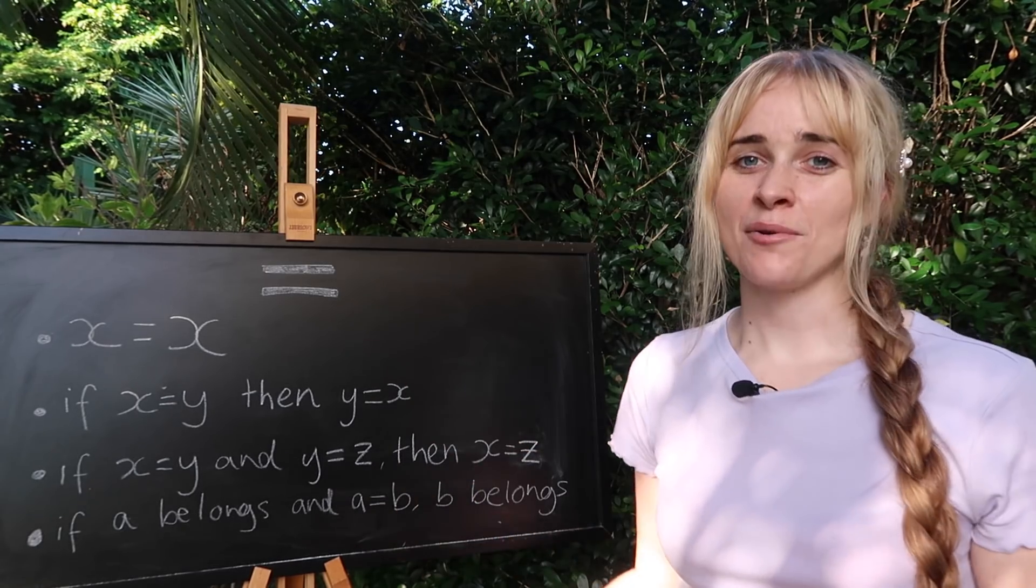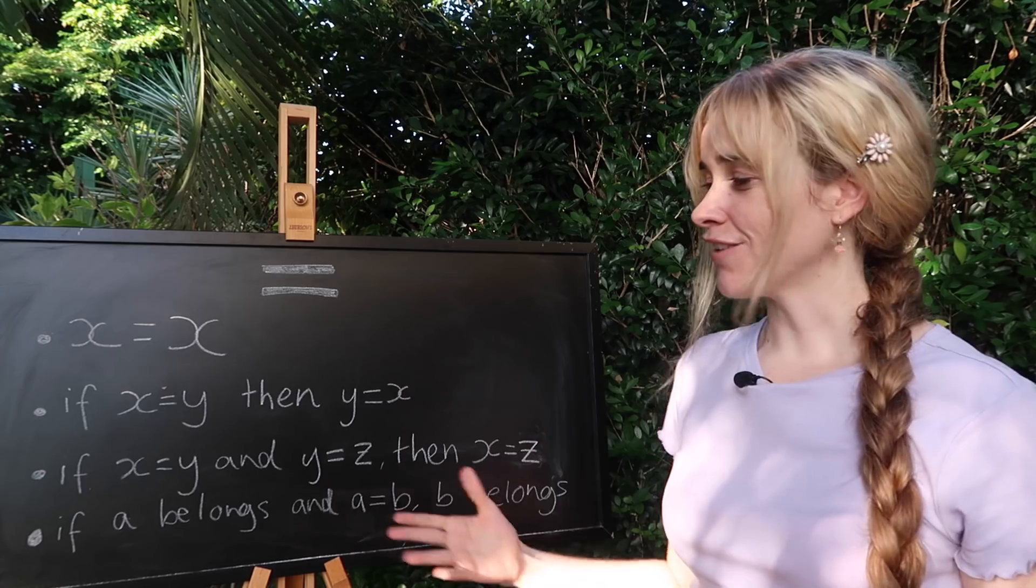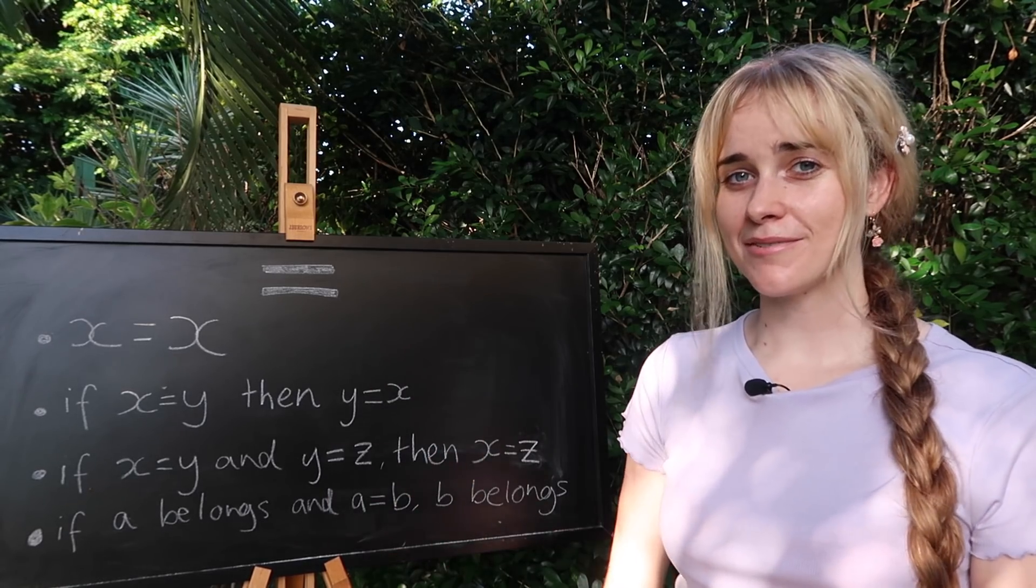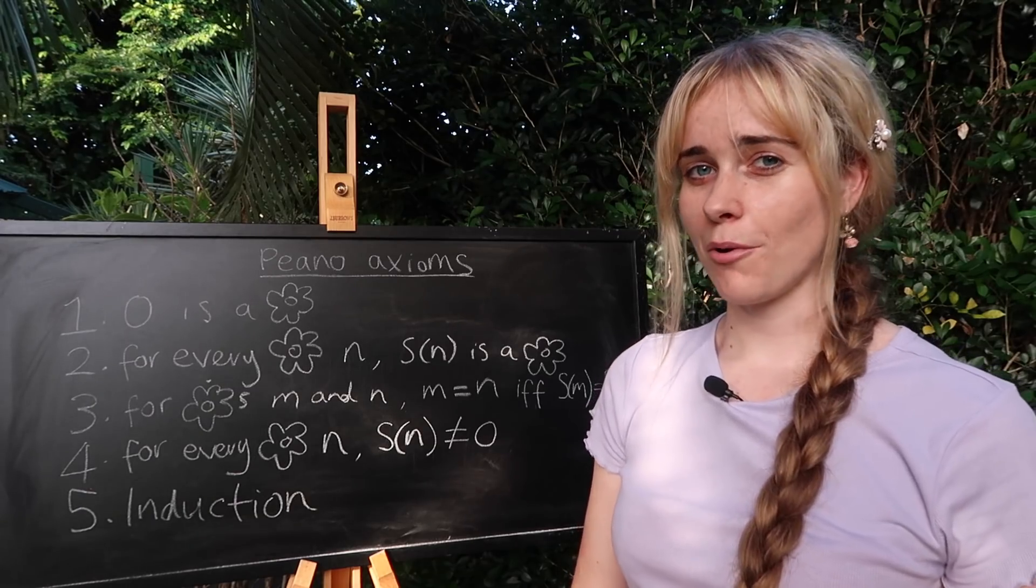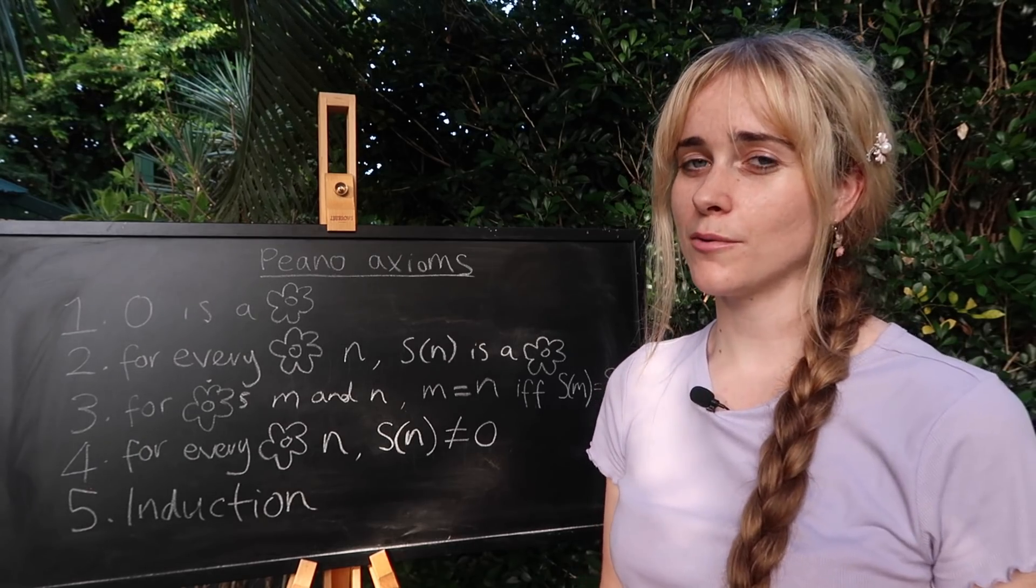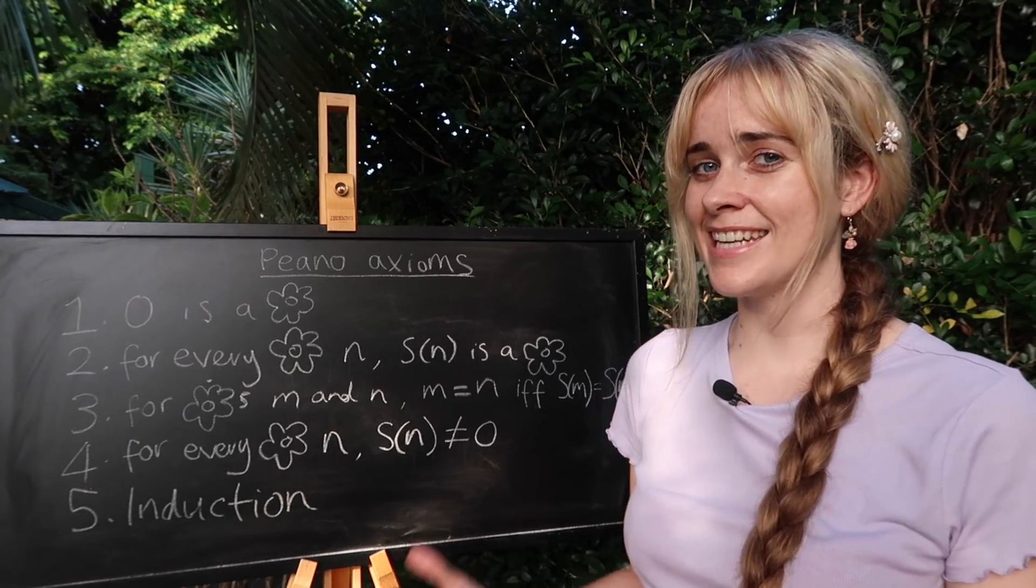These are the laws that we need to understand what it means to equal something and now at least we can use an equal in our equation and know that we defined it from some first principles. So now that we have equality out of the way we can now start to think about what it means to be a number.